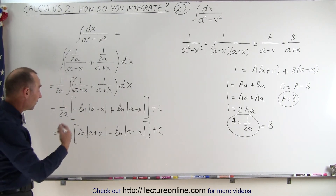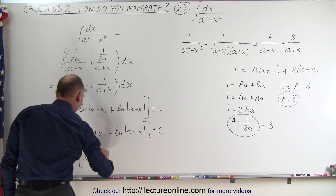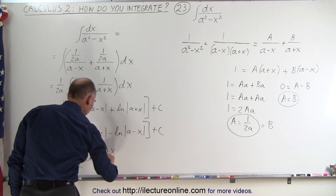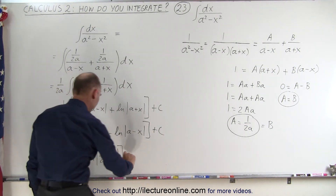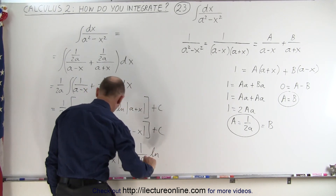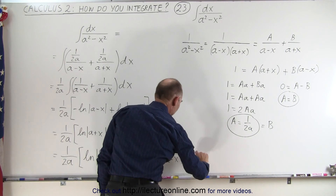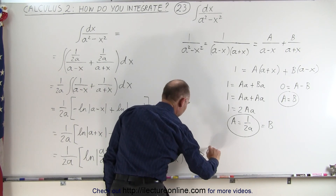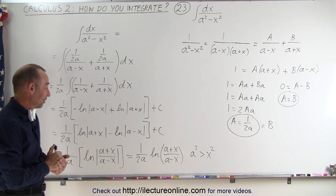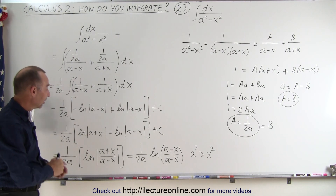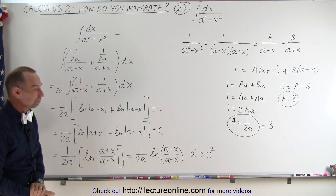Since the natural log of A minus the natural log of B can be written as the natural log of A over B, this becomes (1 over 2a) times the natural log of the quantity (a plus x) over (a minus x), plus the constant of integration. If you prefer without absolute value signs, you can write it as (1 over 2a) times the natural log of (a plus x) over (a minus x), stipulating that a squared must be larger than x squared, so that the denominator is never negative and we avoid taking the natural log of a negative number. So the answer is simply (1 over 2a) times the natural log of (a plus x) divided by (a minus x).